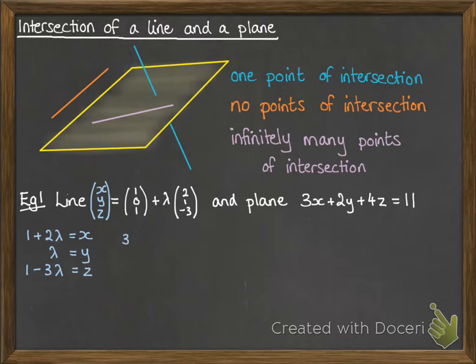Then if that line lies on the plane, we can substitute those x, y, and z values into the equation of the plane and work out what lambda has to be, what value it would have.